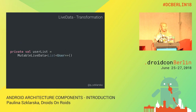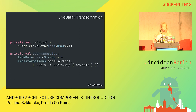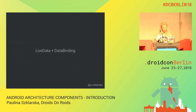Sometimes there is a need to transform data in a ViewModel. We can use Transformations to do this. For example, if we have a list of users but we'd like to expose only the names, we can use Transformations.map to create new LiveData based on the old LiveData.